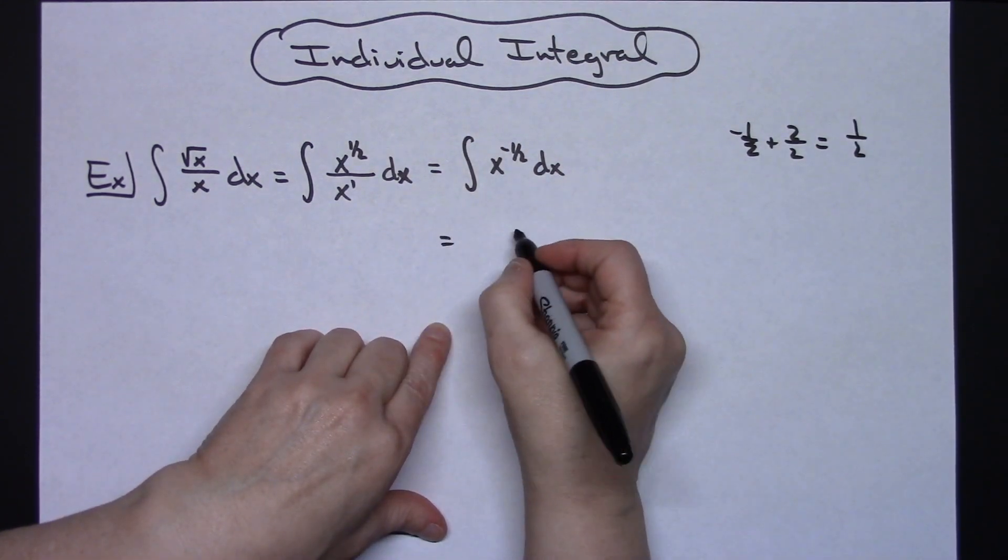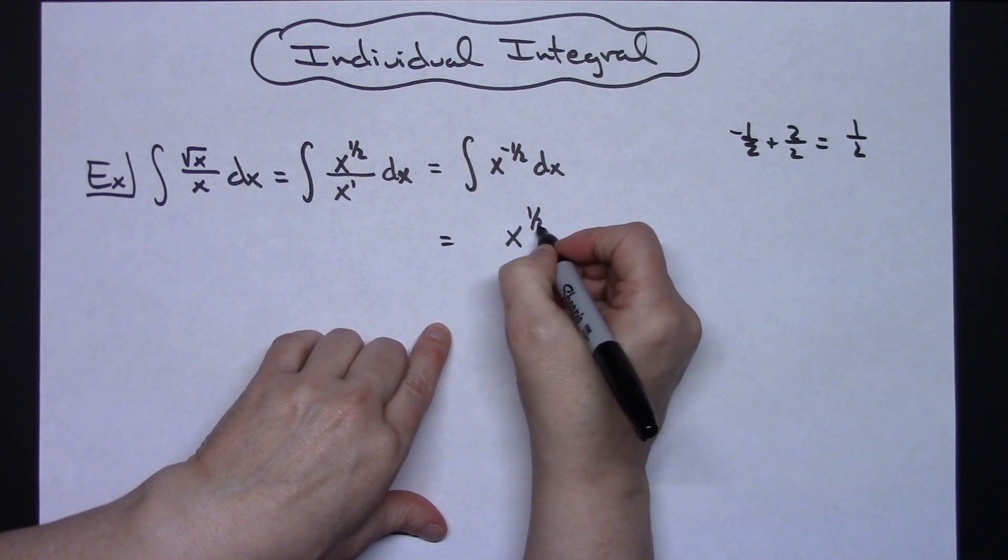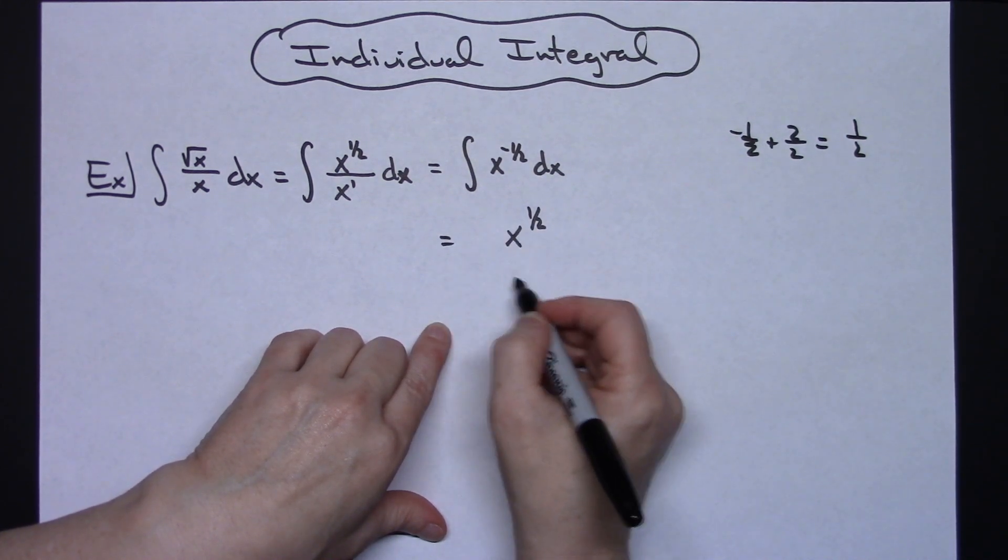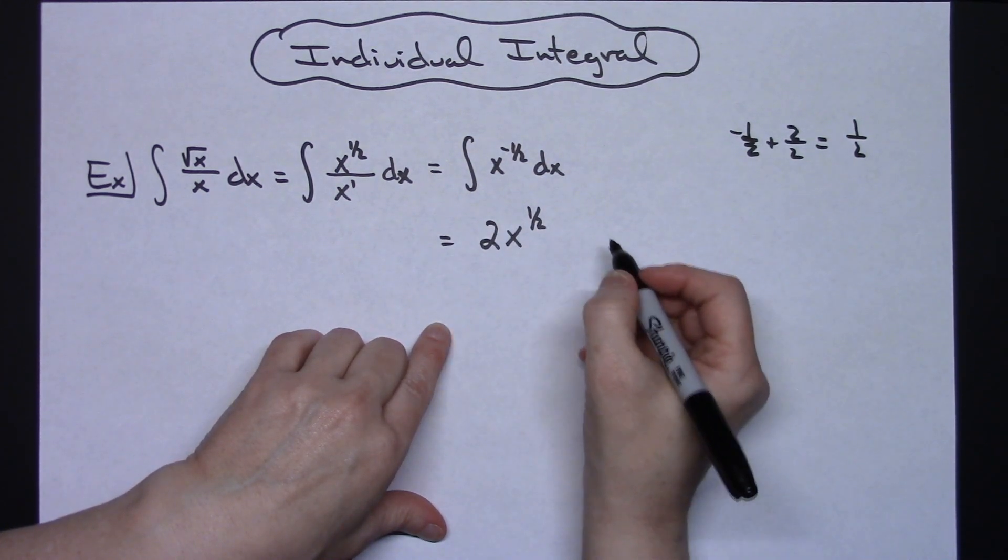So then integrating there, I would have an x to the 1/2 power, and then flipping that 1 over 1/2 is going to give you a 2 out here in front.